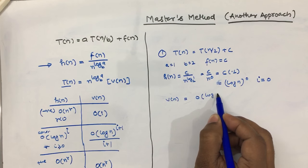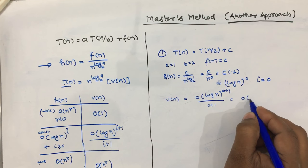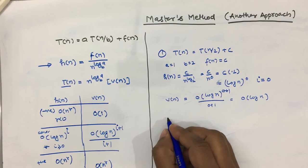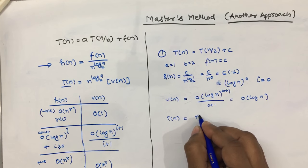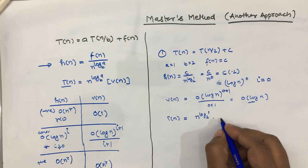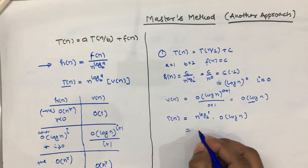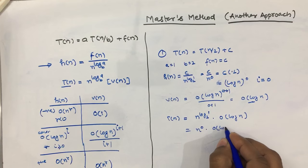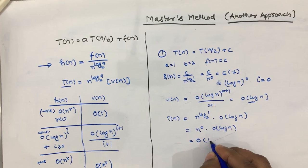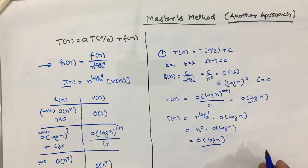With i = 0, we find v(n) = O(log(n)^(0+1) / (0+1)) = O(log n). Then T(n) = n^(log_1 base 2) × v(n) = n^0 × O(log n) = O(log n). So the time complexity of this recurrence relation is O(log n).